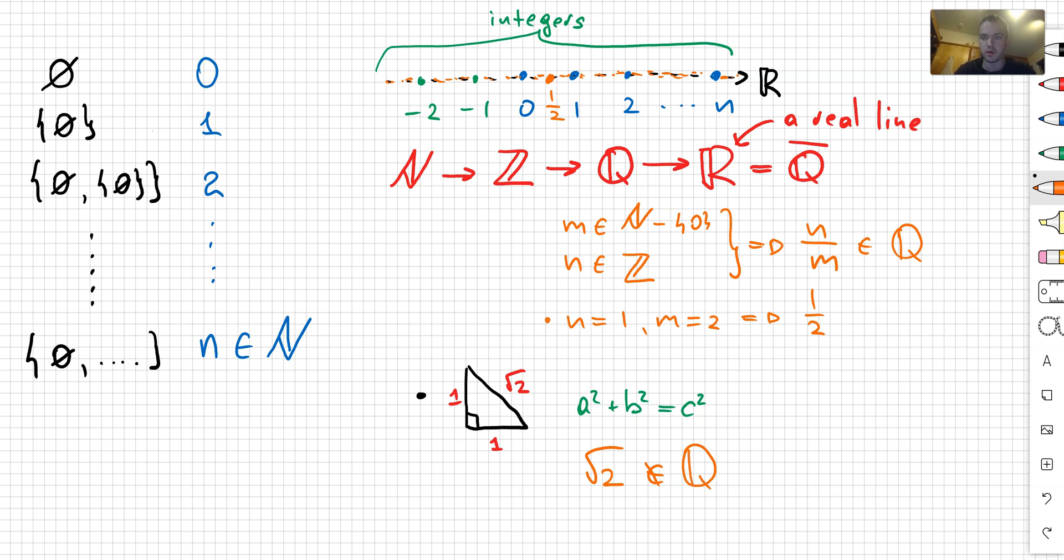So basically we create some number which is 1.414..., which is going to be somewhere here. And that hole is going to be filled in by using some sort of procedure which is called completion. So after doing the completion, we will finally create the real line, which is the first important object in mathematics.